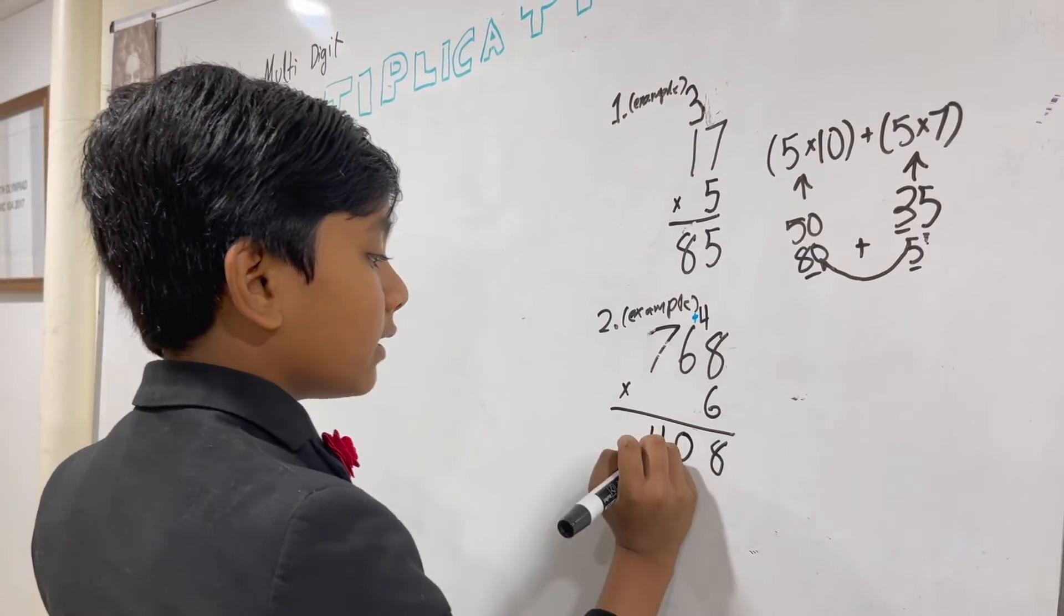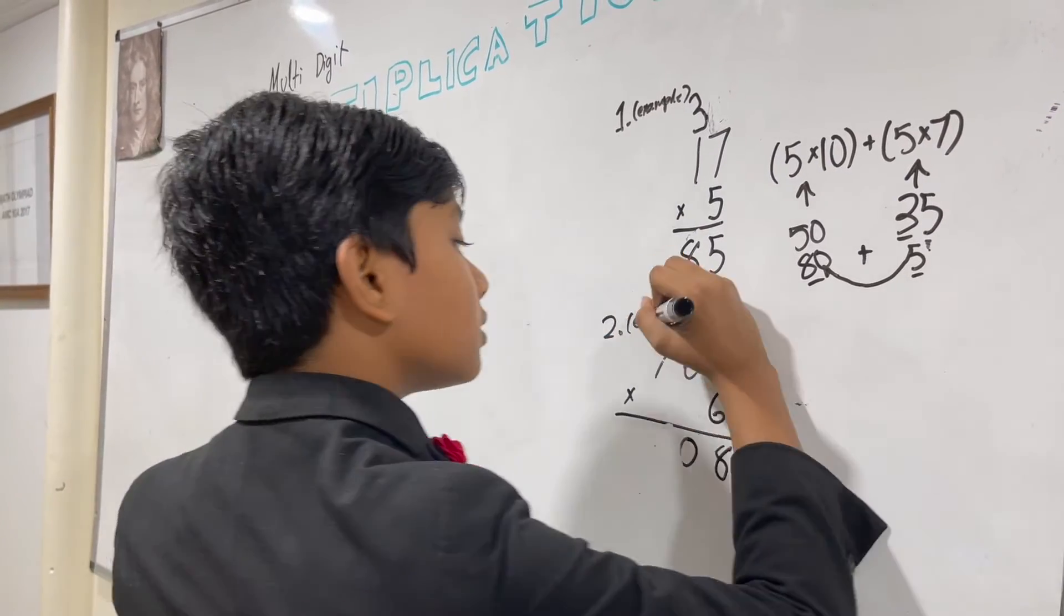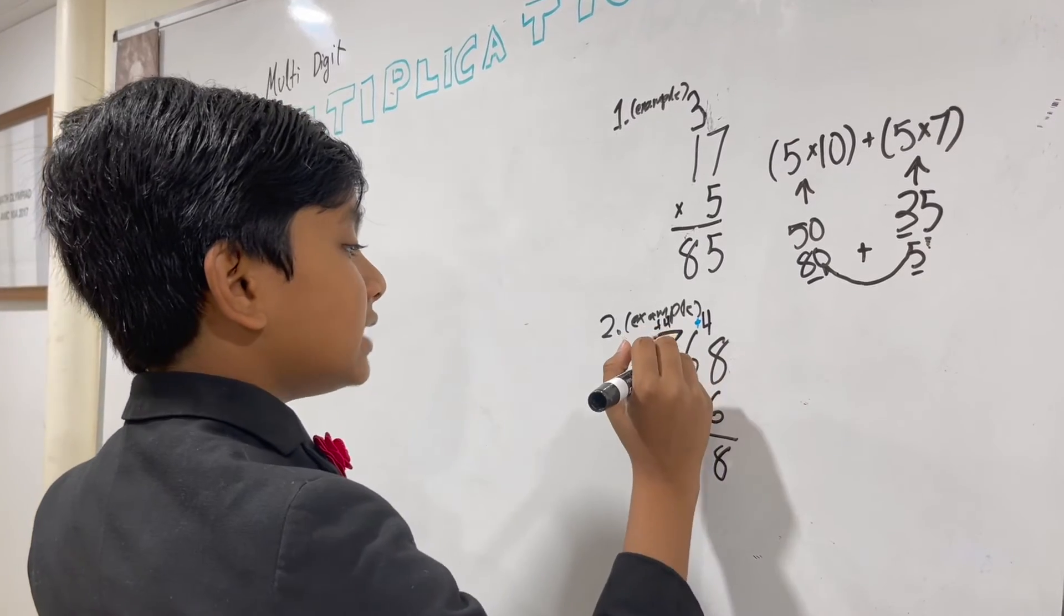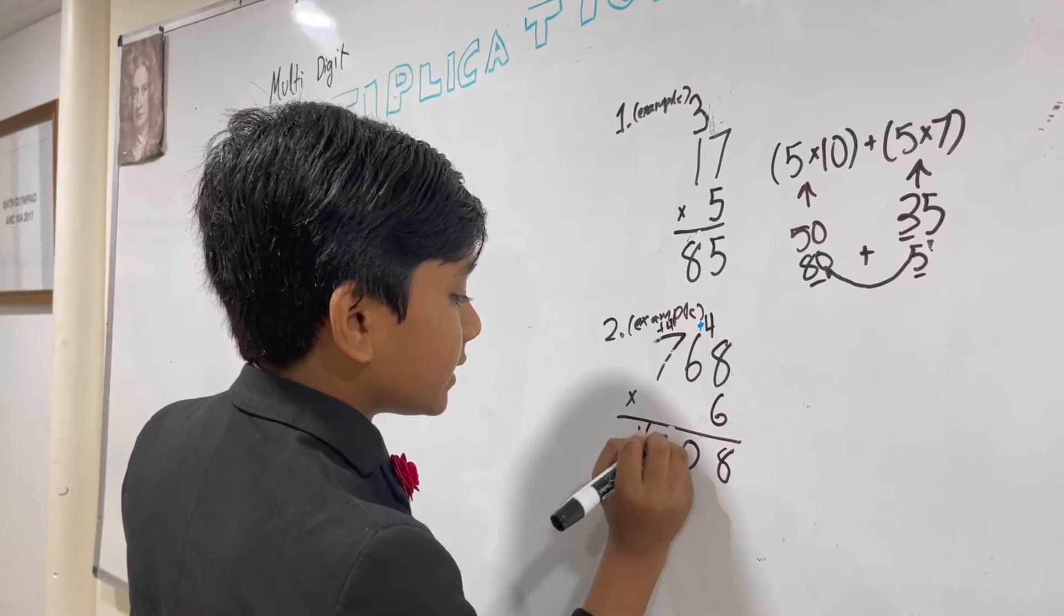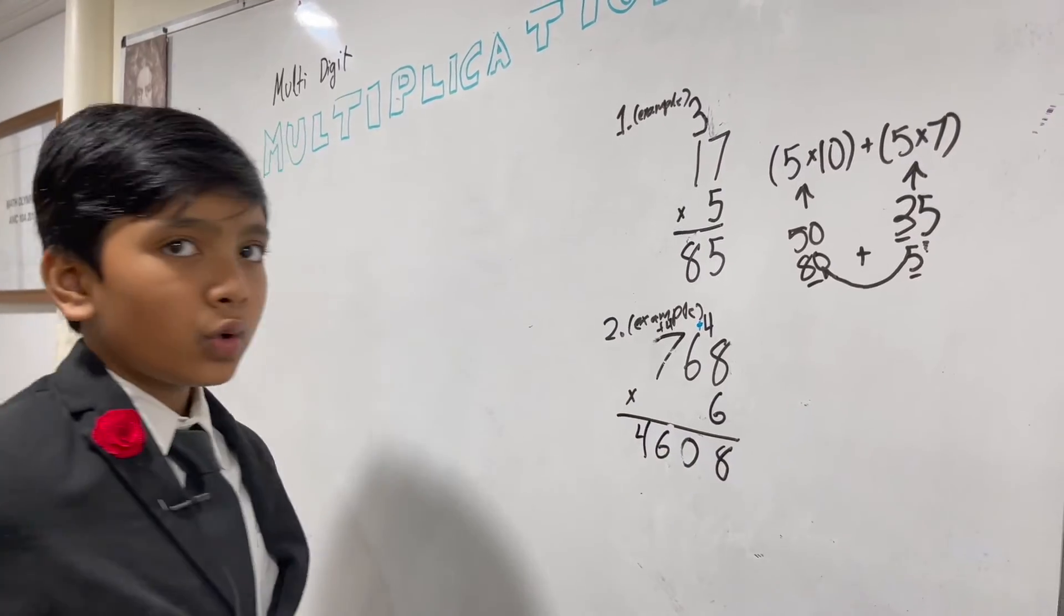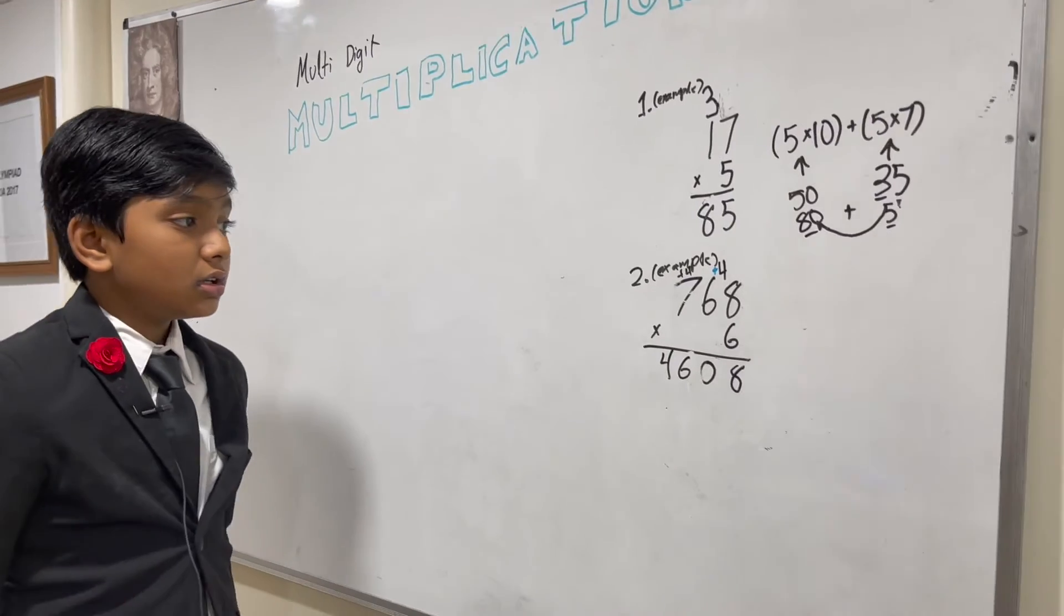We, once again, take this, move it up. 6 times 7 plus 4 is 46. 4,608. Wow.